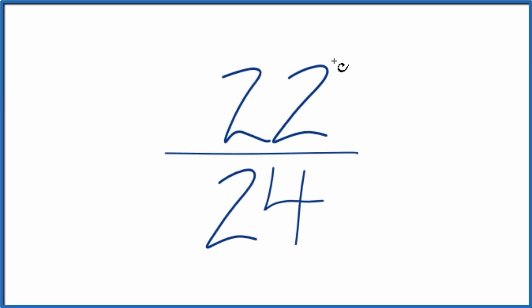Here's how you can simplify the fraction 22/24 down to lowest terms. So when we look at 22/24, what we want to do is find another fraction that's equivalent to 22 divided by 24, just that we want it in lowest terms.